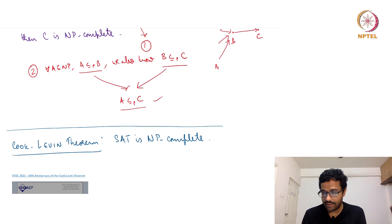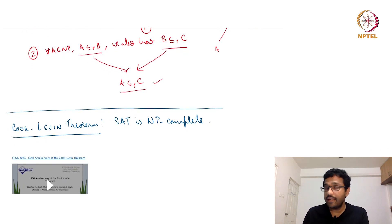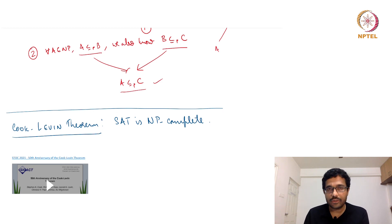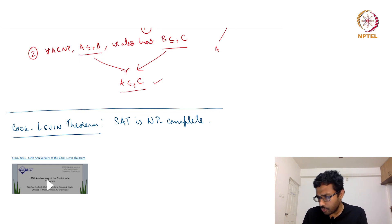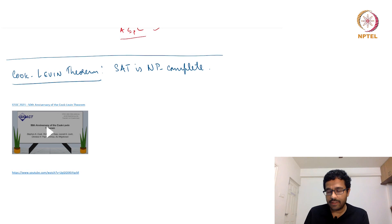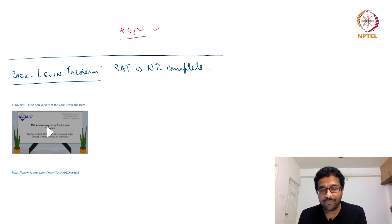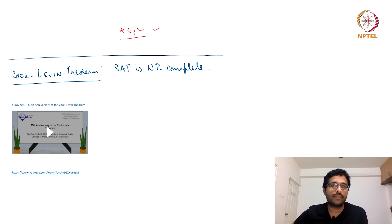Cook and Levin independently — Cook in Canada and Levin in Russia — showed that SAT, or 3SAT, is NP-complete. This was done in 1971. Now it is 2021, so we have exactly 50 years from when SAT was proved to be NP-complete, starting off the area of NP-completeness.